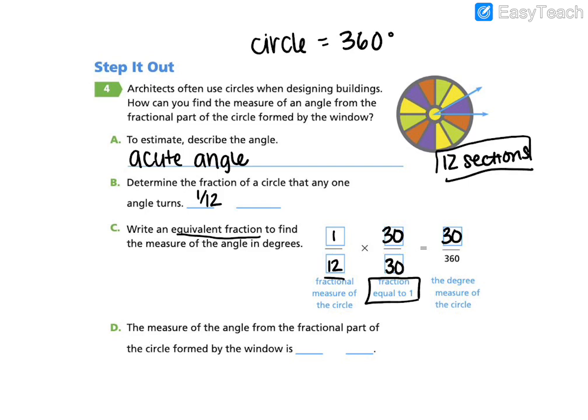And we find that the degree measure of the circle is 30 out of 360. So what that's meaning, 30 out of 360, this whole circle is worth 360 degrees. So out of those 360 degrees, this purple section is 30 of those 360 degrees. So the measure of the angle from the fractional part of the circle formed by the window is equal to 30 degrees. Because out of the entire 360 in the circle, it takes up 30, meaning it's 30 degrees.